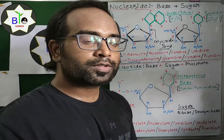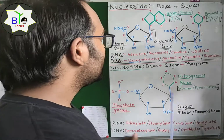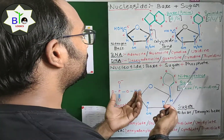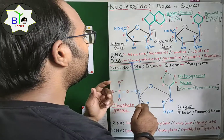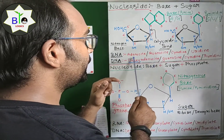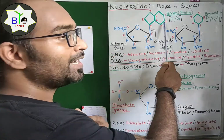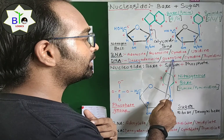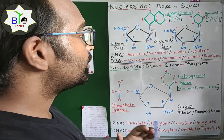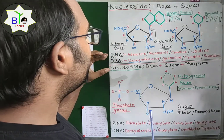Now if we talk about nucleosides in DNA, the prefix 'deoxy' is added. If adenine is present, it will be known as deoxyadenosine. If guanine is present, it will be deoxyguanosine; cytosine gives deoxycytidine, and thymine gives deoxythymidine.